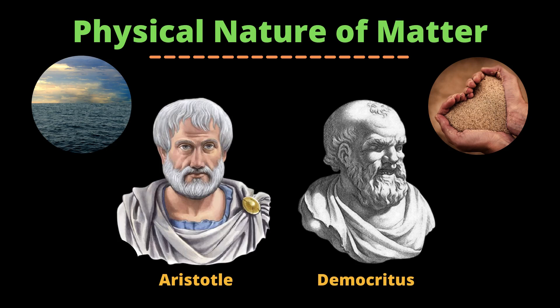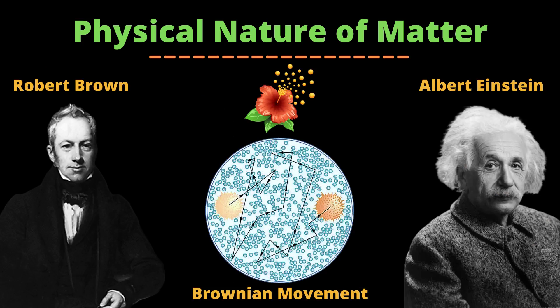With the experiment of Scottish botanist Robert Brown, the true physical nature of matter was proven. In 1827, he placed some pollen grains in water and observed it under his microscope. He observed that the pollen grains were moving randomly in water.